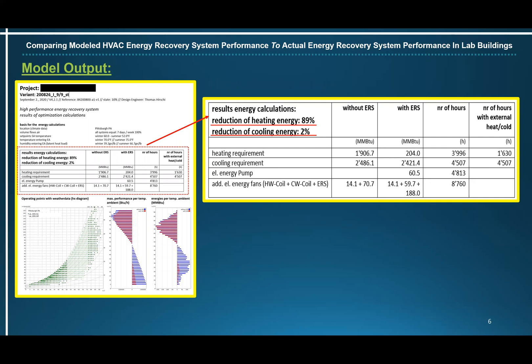Let's look at some model output — first the results of the energy calculation values. There's a blow-up of these values on the right side of the screen. This table shows the annual heating, cooling, and energy consumption results with and without energy recovery. The annual heating requirement without energy recovery is 1,906 million BTUs; with energy recovery it drops to 204 million BTUs. The annual cooling requirement without energy recovery is 2,421 million BTUs. The last two lines show pump and fan energy, and the table also shows the number of heating and cooling hours per year.